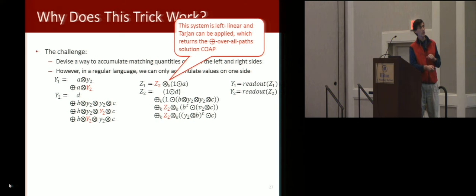So why does this work? As we had with pairing, we now are gonna do the same thing. We're gonna put the coupled values on the right, we've got a left linear system, we can apply Tarjan, and the Tarjan algorithm returns the desired value, the combined over all paths.